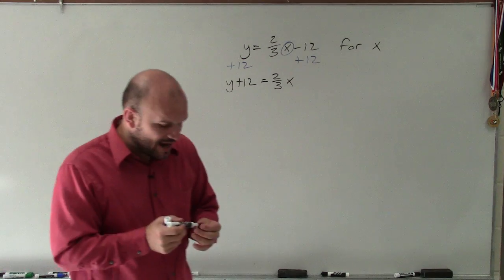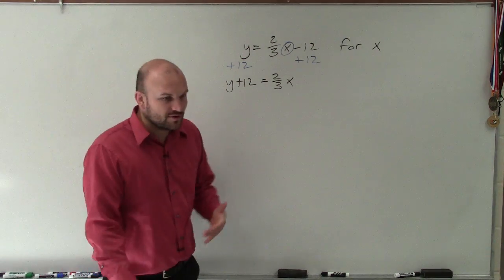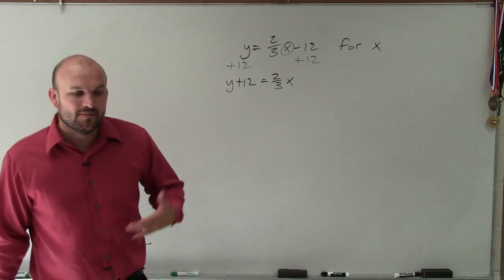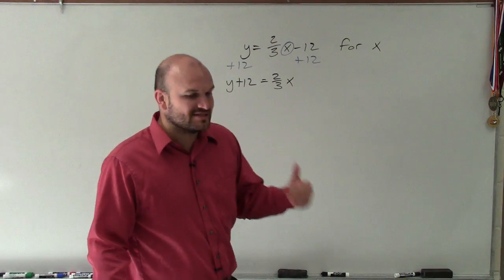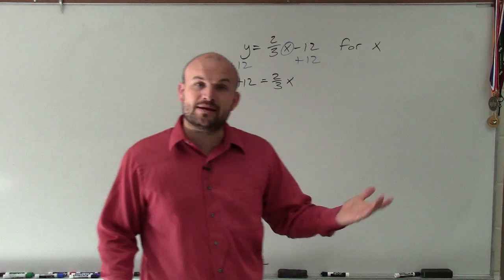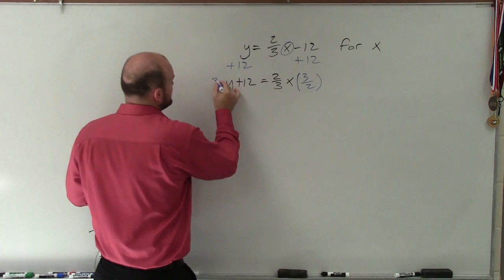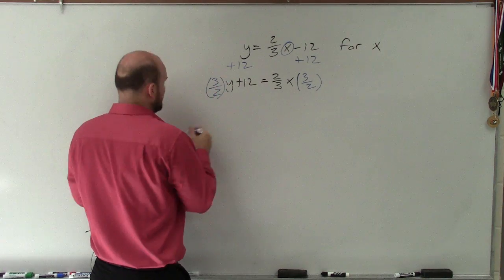Now to undo this fraction, you can see I'm multiplying by 2/3rds. Well, how do you undo multiplying 2/3rds? Well, you could definitely divide by 2/3rds. But when we look into dividing fractions, that's the same process as multiplying by the reciprocal. So basically, I can just multiply by the reciprocal, which would be 3 halves on both sides.